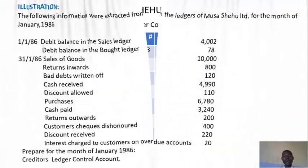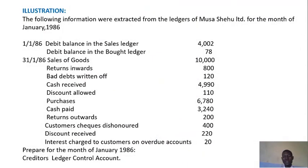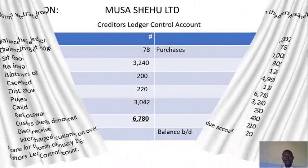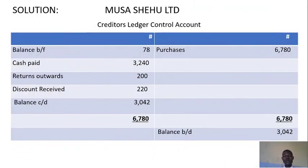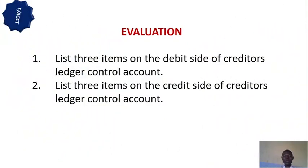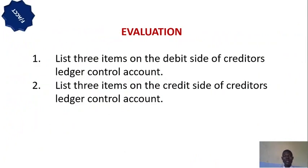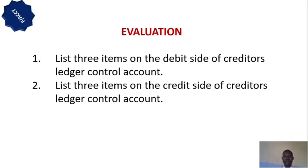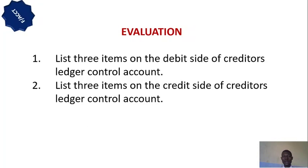You must know your format. Now the next thing we are going to look at will be our evaluation. The evaluation asks: 1. List 3 items on the debit side of Creditor's Ledger Control Account. 2. List 3 items on the credit side of Creditor's Ledger Control Account.